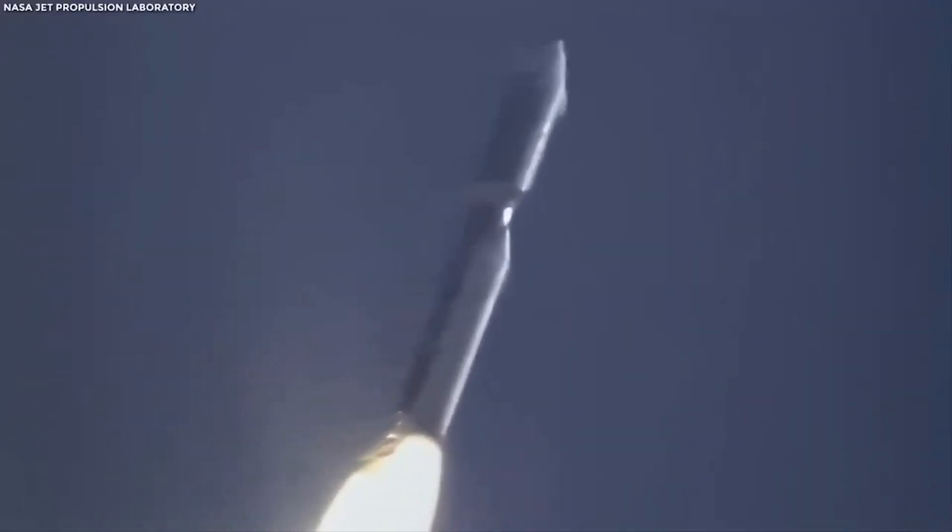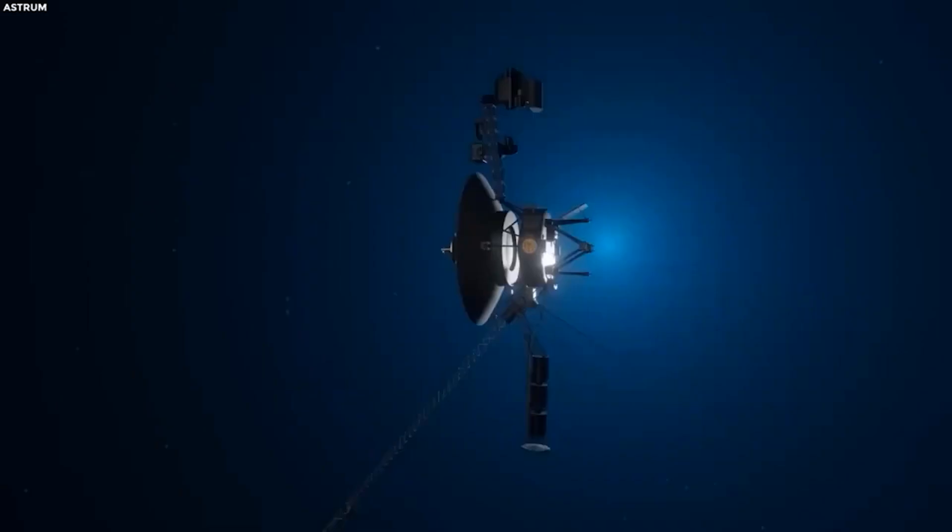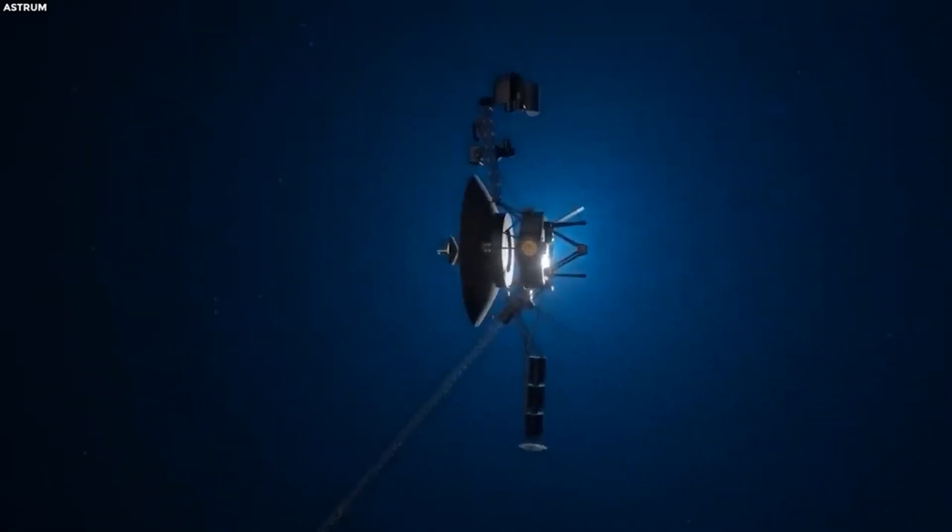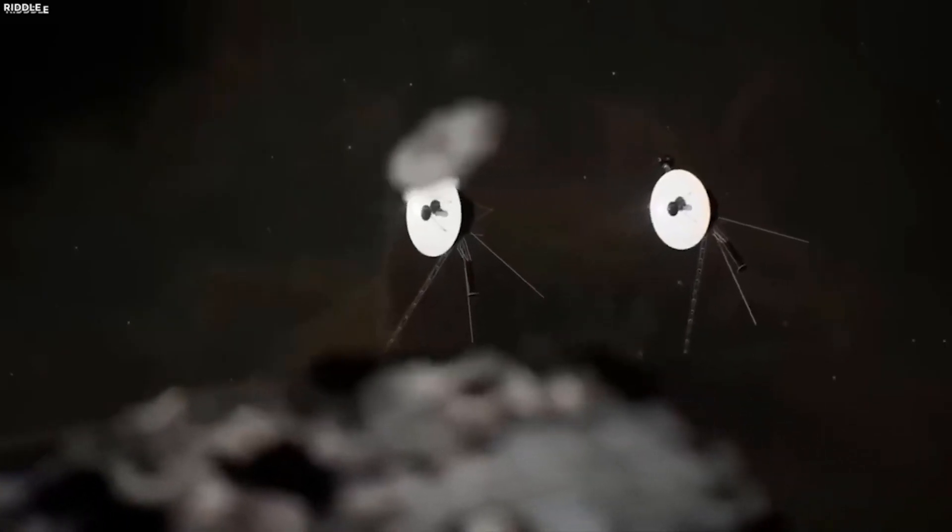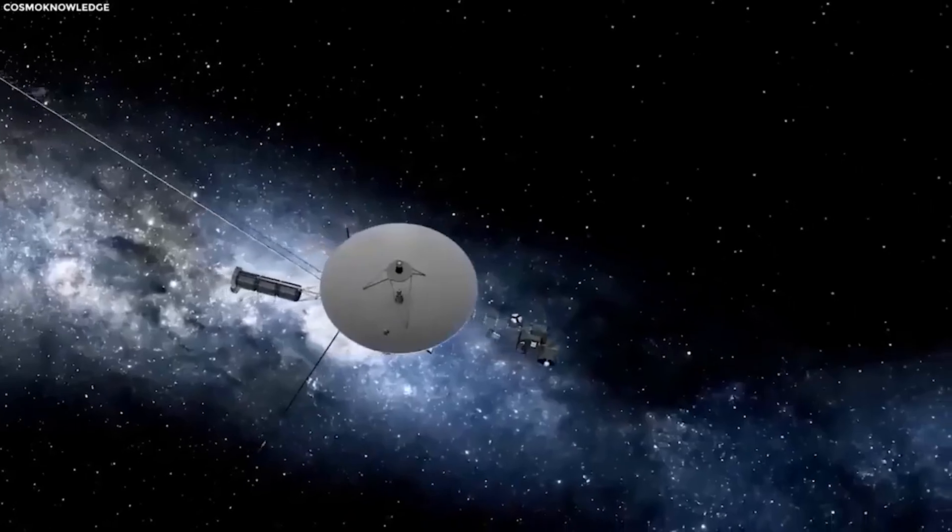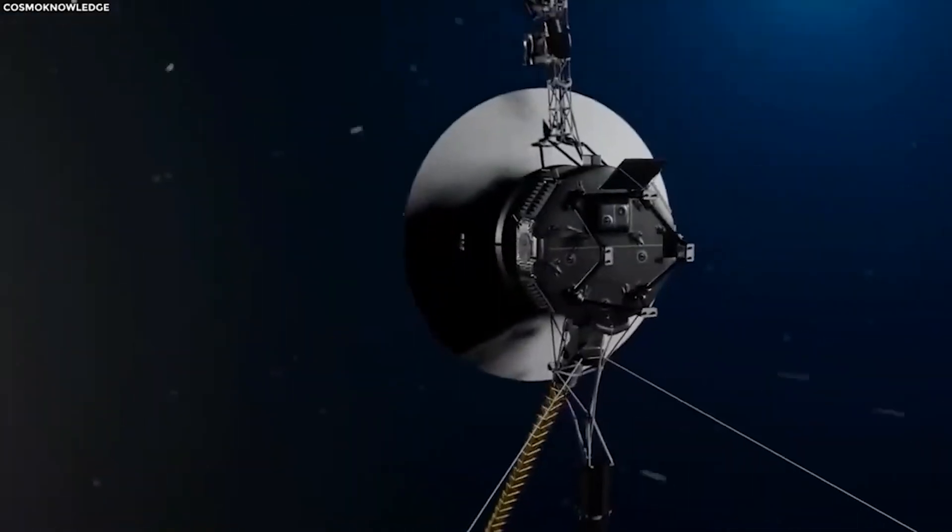In this region the stream of charged particles from the sun, known as solar wind, abruptly slowed down from supersonic speeds and became turbulent. Voyager 1's environment was consistent for about five and a half years. The spacecraft then detected that outward speed of the solar wind slowed to zero. The intensity of the magnetic field also began to increase at that time.